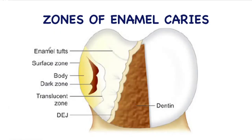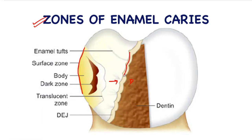In case of enamel caries, if we look at the histopathological sections, different zones are seen before complete disintegration of enamel. Starting from the surface of the enamel and proceeding towards the DEJ — this is dentine, so this is the DEJ.